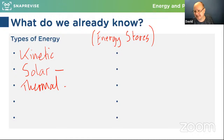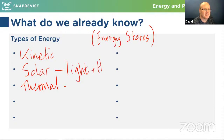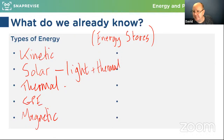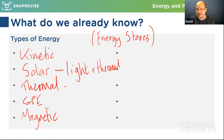We have kinetic, thermal, elastic, elastic potential — brilliant. Solar would be light and thermal as energy types. We've got gravitational potential energy — GPE — and we can store energy in a magnetic field, so magnetic is a form of energy store.